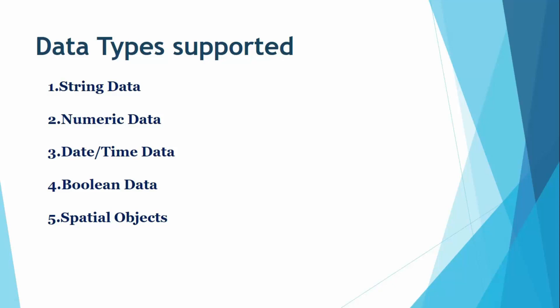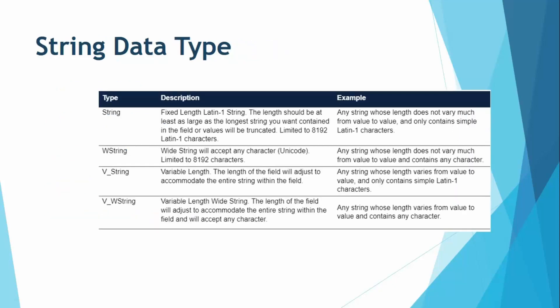First, we have the string data type. String data represents only text, even if the data is numeric, spaces, or special characters. If a string consists of numbers, it is advised to first convert it to the numeric data type before performing calculations. String data is kept as-is and is further divided into four categories.